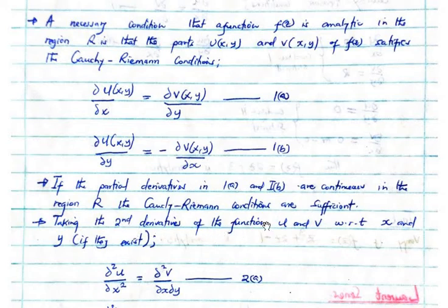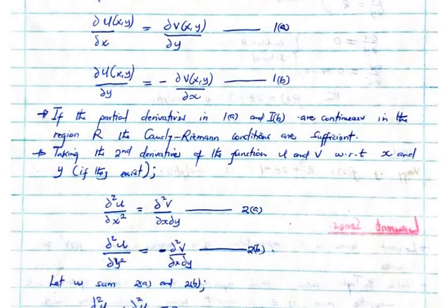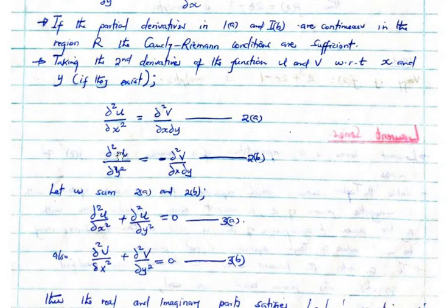Taking the second derivatives of the function u and v with respect to x and y, if they exist, this is what we obtain. Let's take the second derivative of u with respect to x, we are supposed to get equal result when we take the second derivative of v with respect to x then followed by y. As we continue looking at that, we also find in the second part, doing the second derivative of u with respect to y will be equal to the negative of the second derivative of v with respect to x and y.